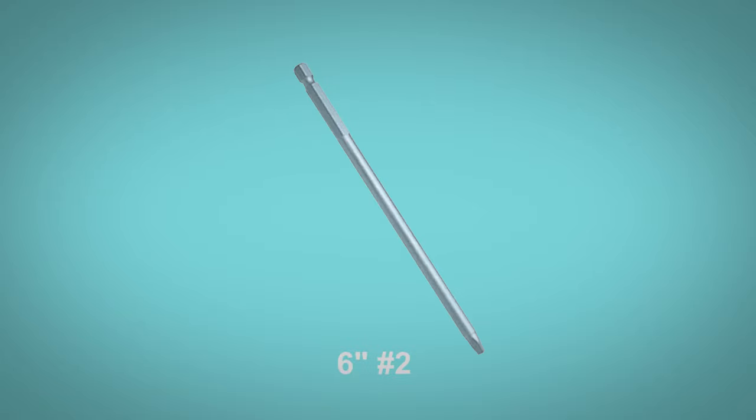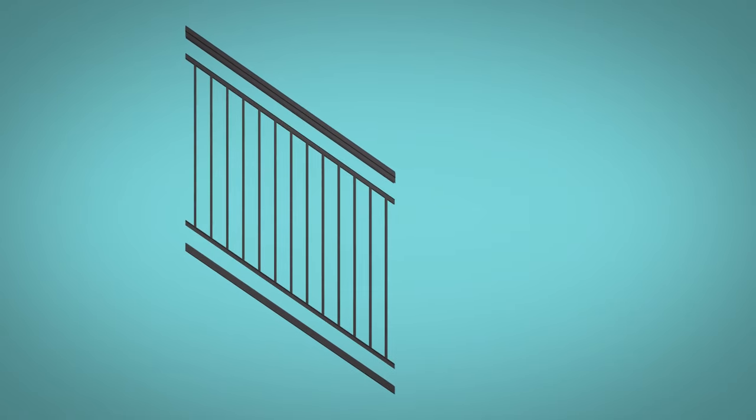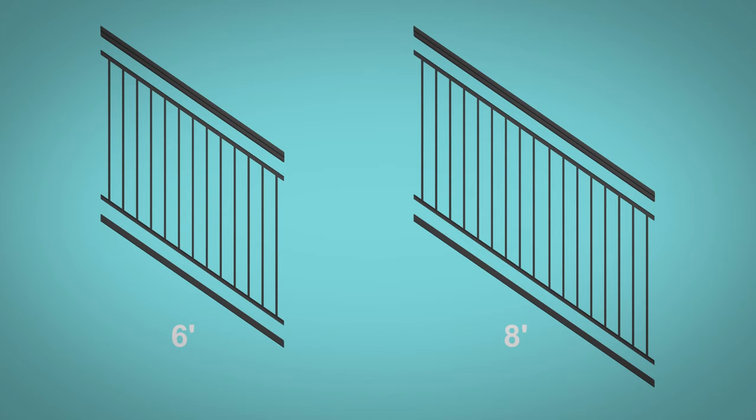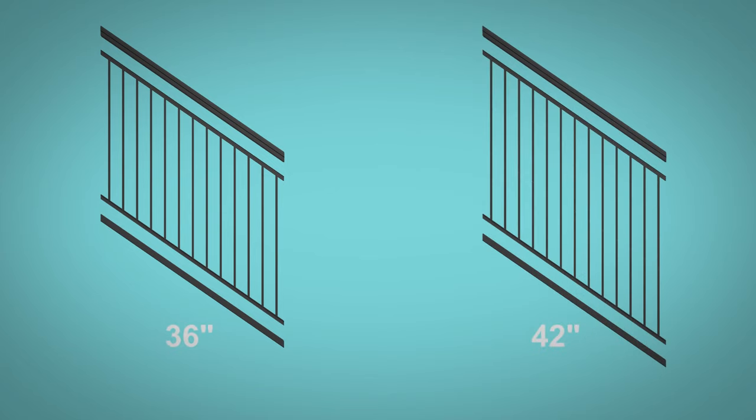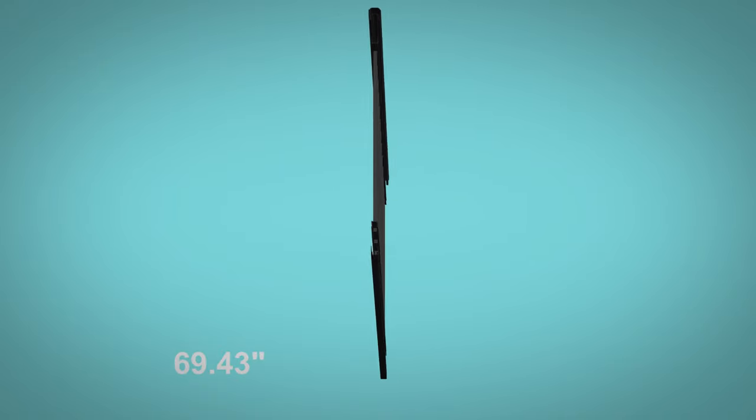Stair panel kits include pre-assembled aluminum stair panel, top and bottom rail snap covers, hardware to attach the stair panel to two posts, and an install guide. Stair panels are available in 6 and 8 foot lengths and 36 and 42 inch heights. The actual length of 6 foot panels is 69.43 inches and 8 foot panels are 91.31 inches.